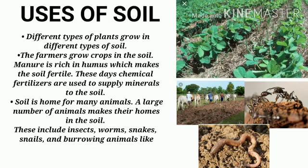Now we will discuss the uses of soil. Different types of plants grow in different types of soil. Farmers grow crops in the soil. Manure is rich in humus, which makes the soil fertile. These days, chemical fertilizers are used to supply minerals to the soil. Soil is also home for many animals — large numbers of animals make their homes in the soil, including insects, worms, snakes, snails, and burrowing animals like rats and moles.